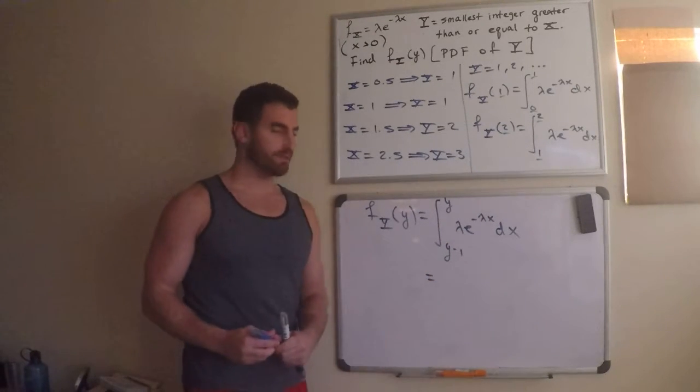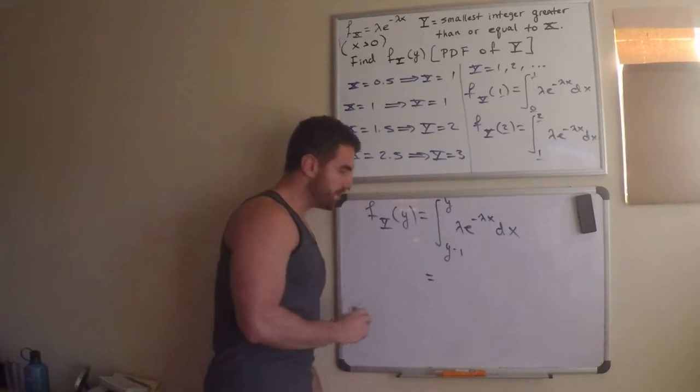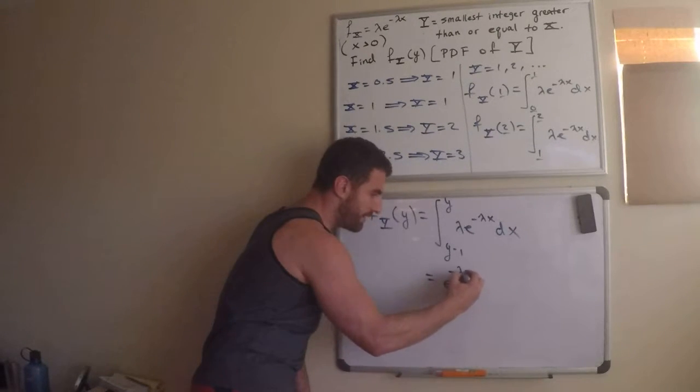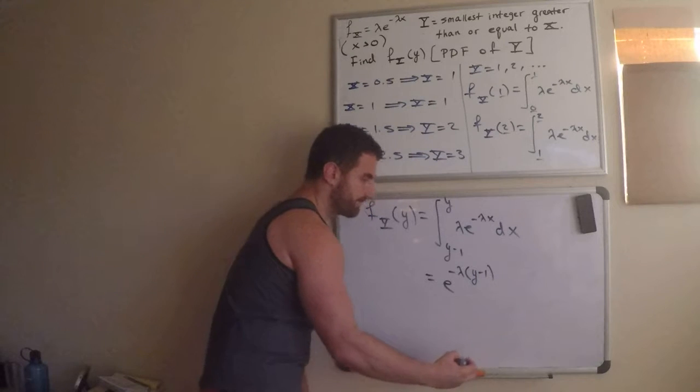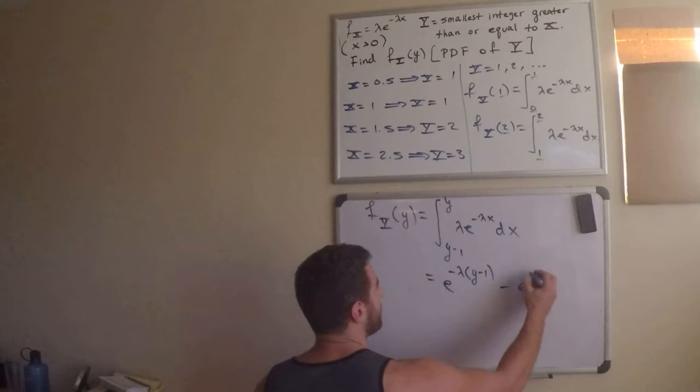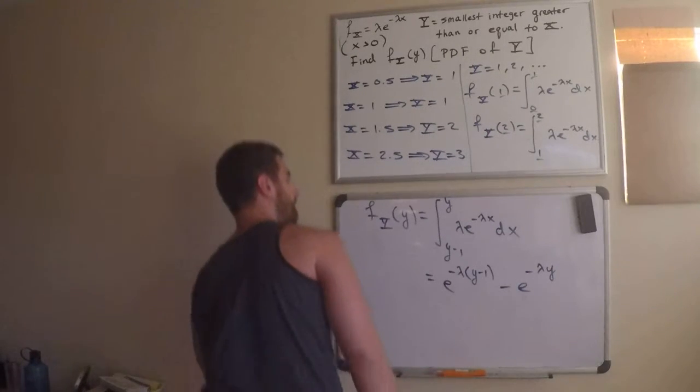It just gets routine after a while. So, convince yourself, if you don't believe me, that this is going to be e to the negative lambda y minus 1, right? Minus e to the negative lambda y, right?